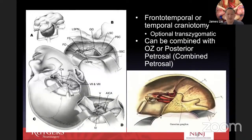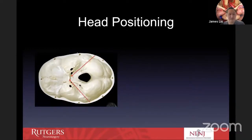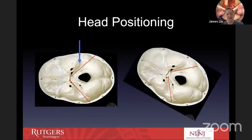Combining the Kawase's approach with others is possible. When positioning the patient, you don't want the head positioned laterally because the petrous apex is far away from you. If you rotate the head roughly 20 to 30 degrees from horizontal, the petrous ridge becomes parallel to the floor. When you're looking down and drilling the petrous apex, it's much closer to you and anatomically more ergonomic.